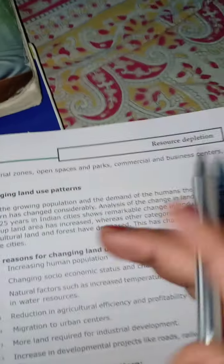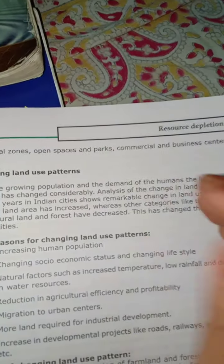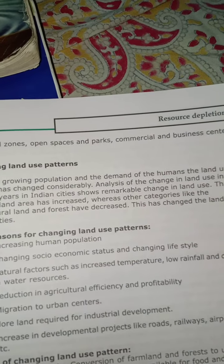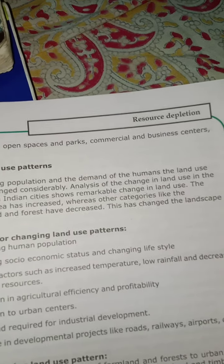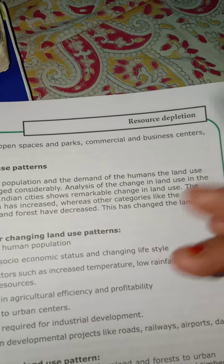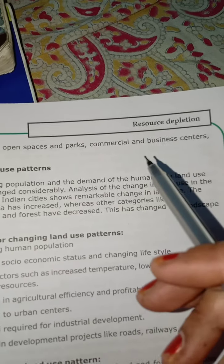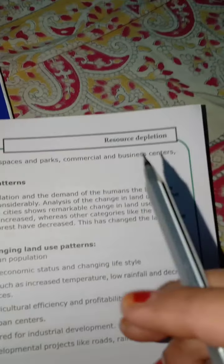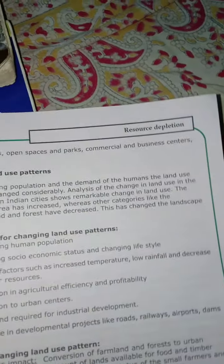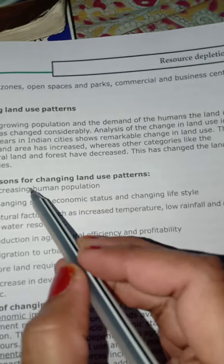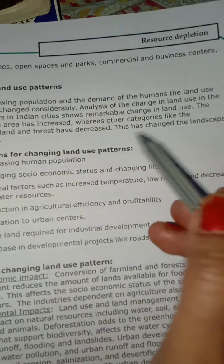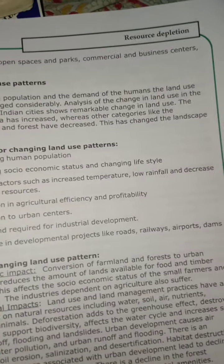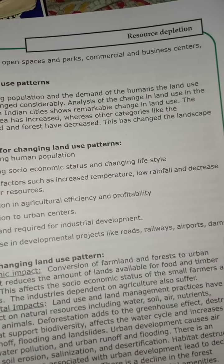We should ensure that agricultural land is not utilized for building settlements, and that settlement land is not used for cultivation, as that would be a loss and a threat. Reasons for changing land use patterns include the changing quality and texture of soil. The first reason is increasing human population — when population increases, people search for housing facilities and go for building concrete jungles.